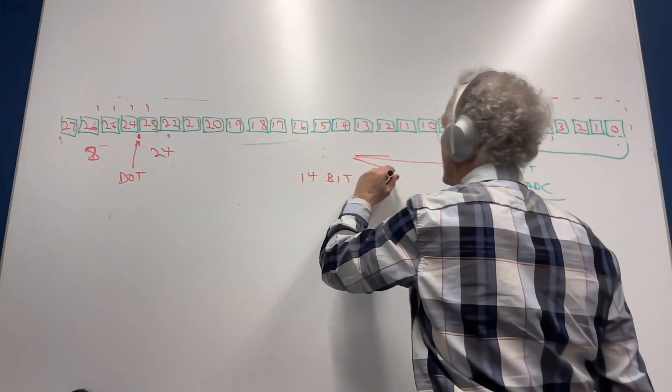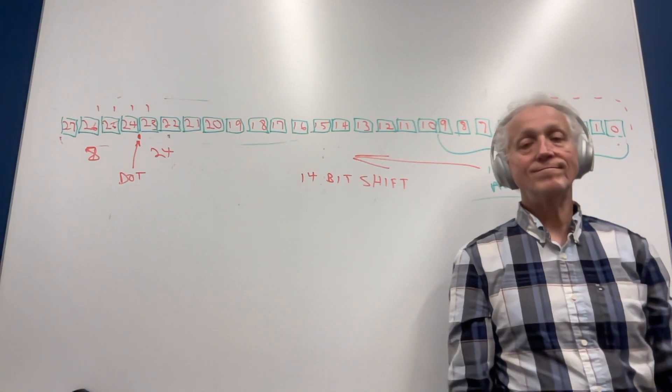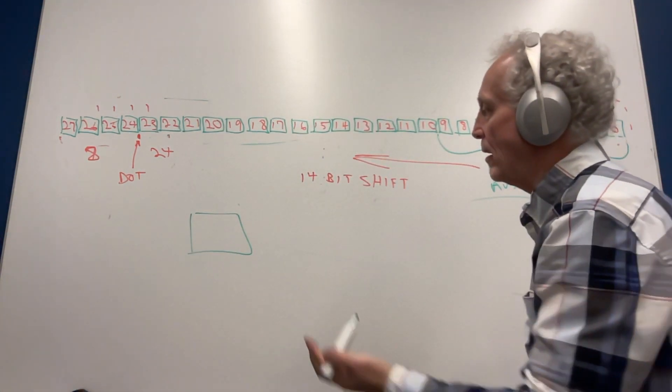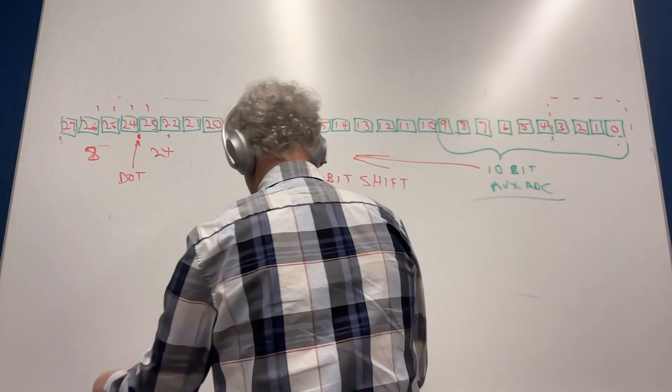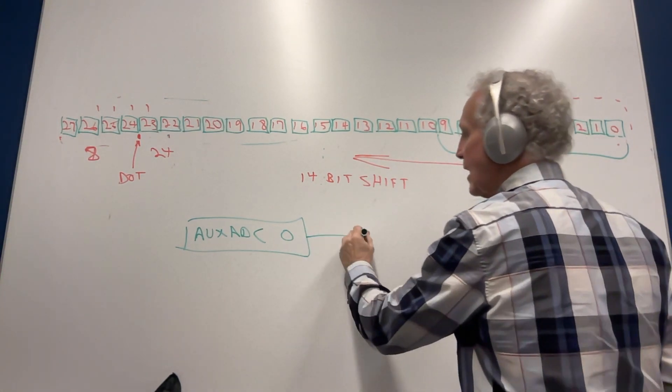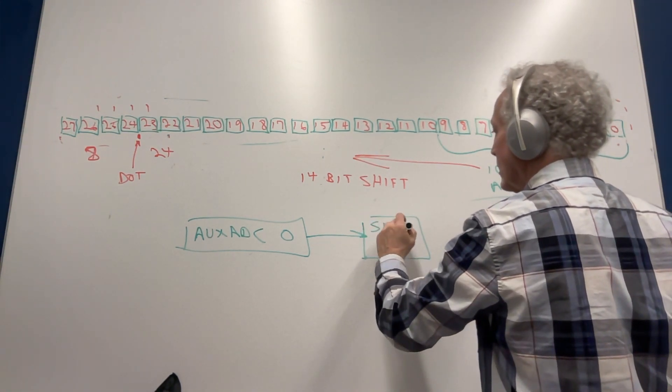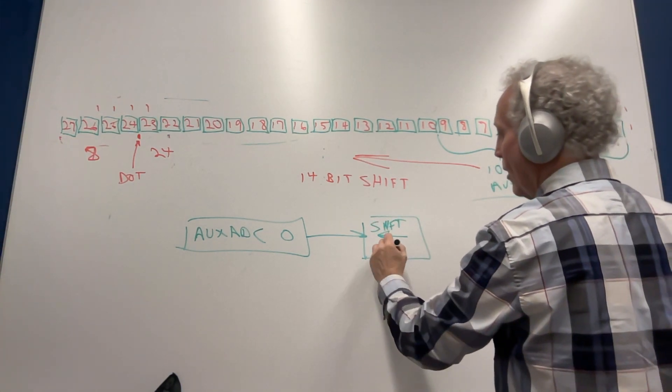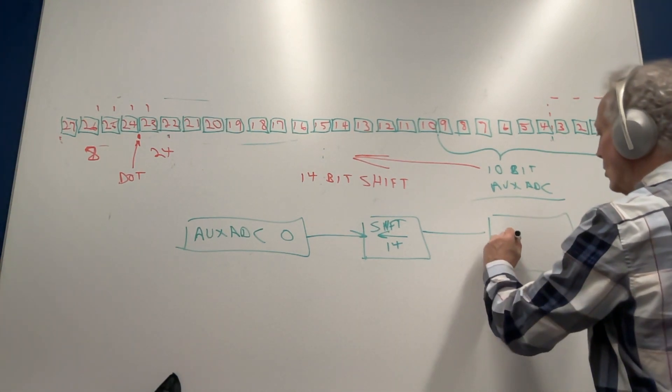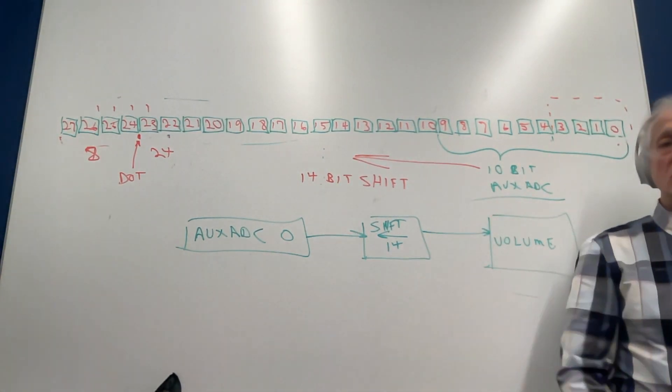We need to shift this 10 bits over so it's sitting in the right place. Simple as that, and it's easy to do in a Sigma 300. We have the aux ADC block, and you choose which one, I'm going to say zero again. So we send that out, but this is that 10 bits right justified. We're going to send this out, we're going to take it to a shift, and we're going to shift it that way 14 bits. So we're going to do a left shift 14 bits, and then we're going to send it to like the volume control.